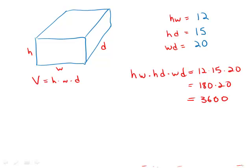Meanwhile, here what we get is h squared, w squared, d squared. And notice what that is, that's just volume squared.